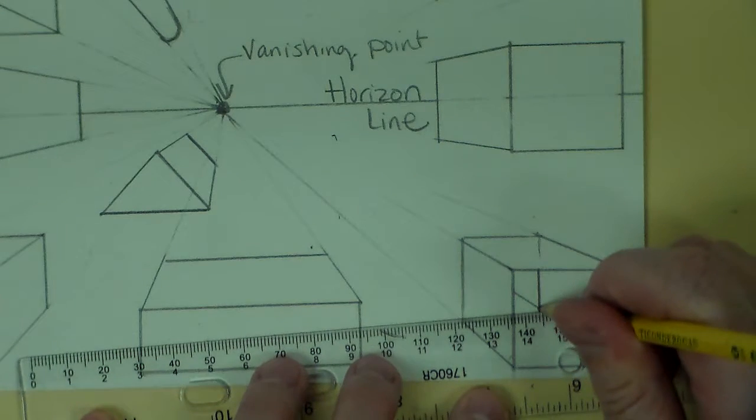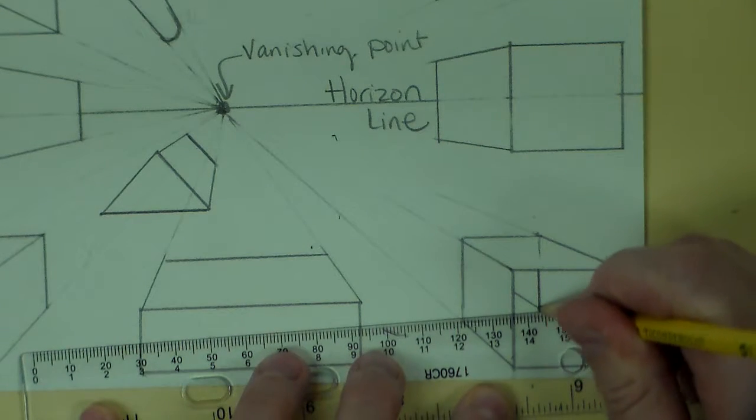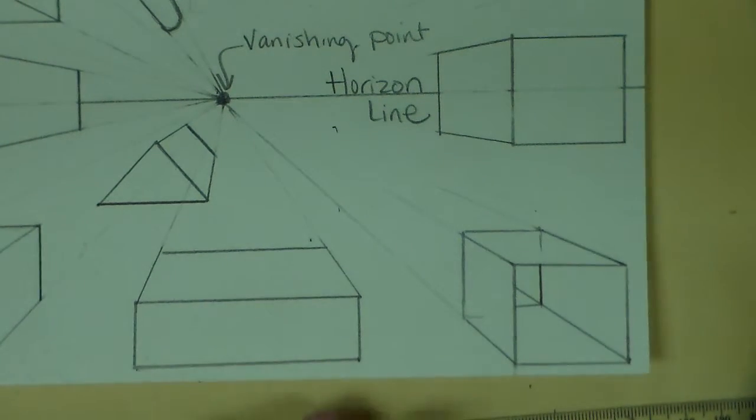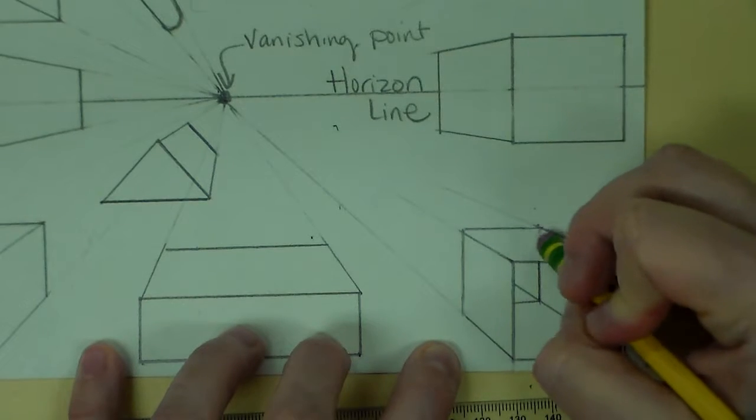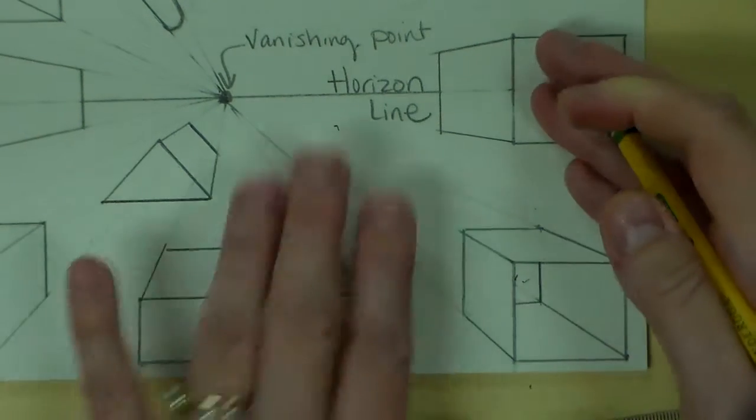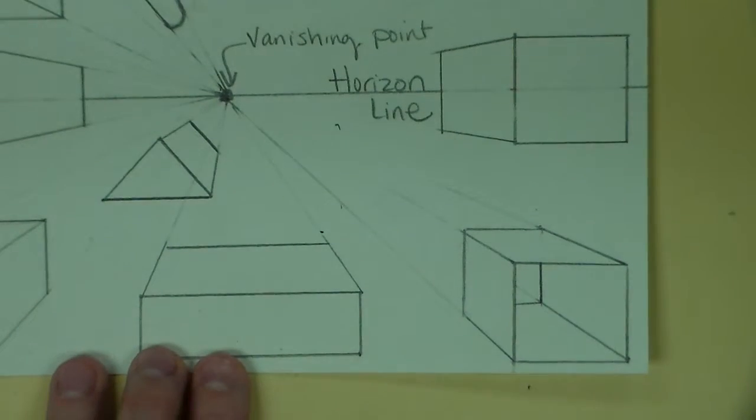In theory, if I drew my box correctly, these should hopefully line up so that I have a line that meets there. Then I can erase that extra line behind the box. And I should have what looks like a box that's open.